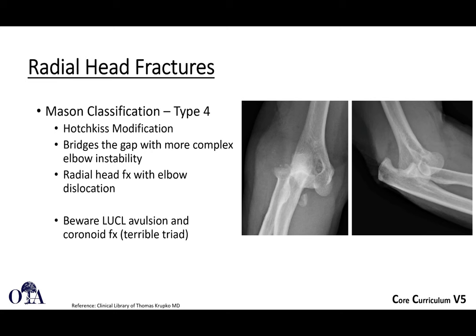Mason Type 4 was added later as the Hotchkiss modification and bridges the gap with more complex elbow instability. This is when you have a radial head fracture with an elbow dislocation. In these cases, you must be aware of lateral ulnar collateral ligament avulsions from the lateral epicondyle, as well as the full package of the terrible triad injury.